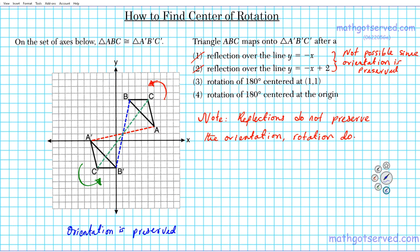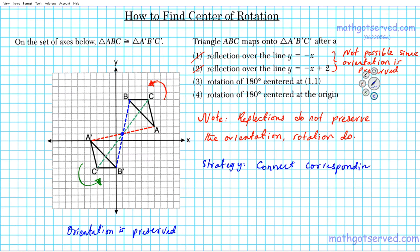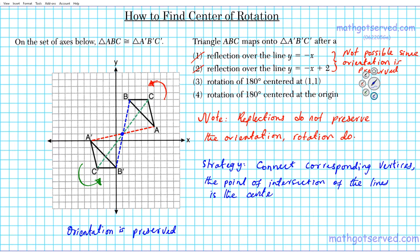So let's write down what we just did. The strategy is to connect corresponding vertices, and the point of intersection of those connecting lines is the center of rotation. Applying this procedure, we can clearly see that the center of rotation is at (1,1), which confirms option three.